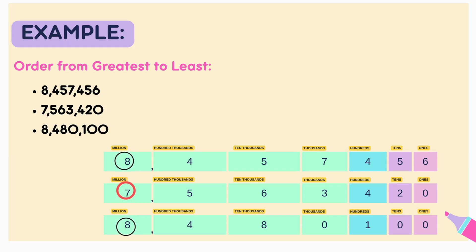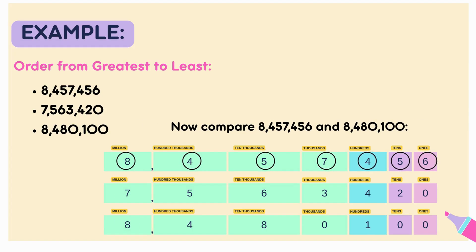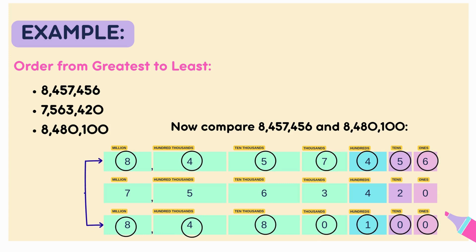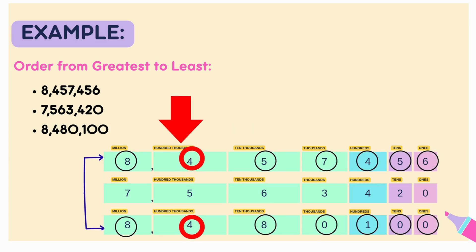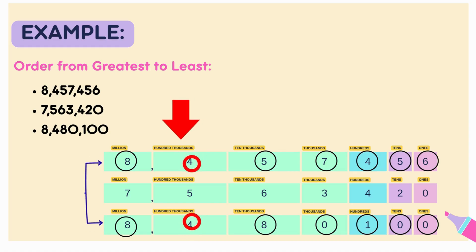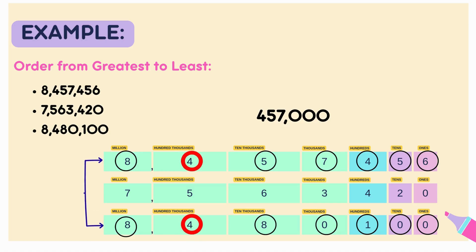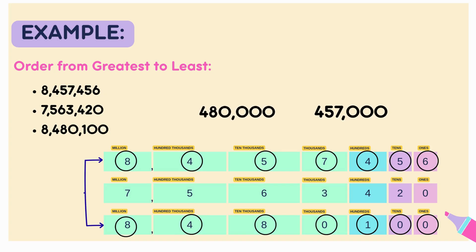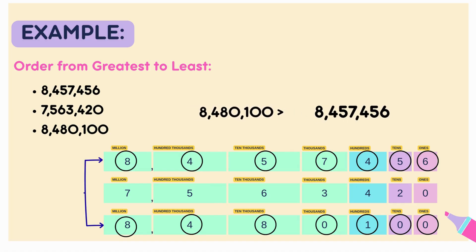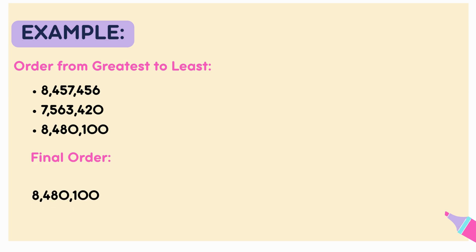Now let's compare the two numbers that both have 8,000,000: 8,457,456 and 8,480,100. Check the hundred thousands: 8,457,456 has 400,000, while 8,480,100 has 480,000. Since 80,000 is more than 57,000, 8,480,100 is greater than 8,457,456. The final answer from greatest to least is: 8,480,100 — 8,457,456 — 7,563,420. Try reading all three numbers out loud — it helps make the values more clear.